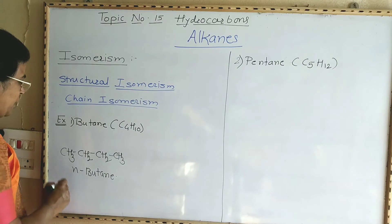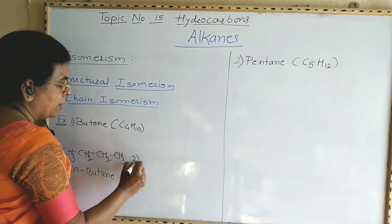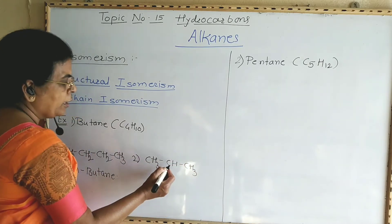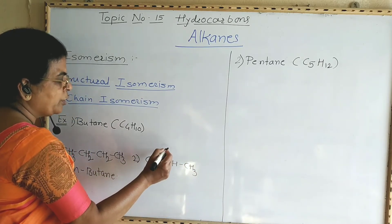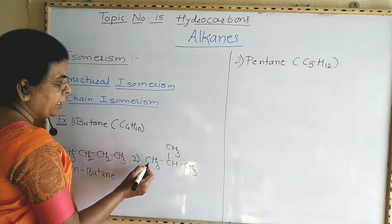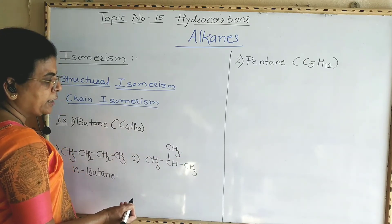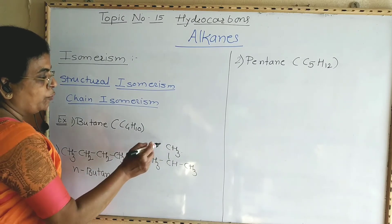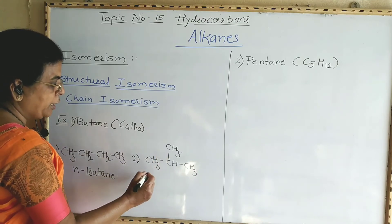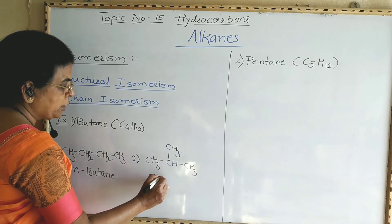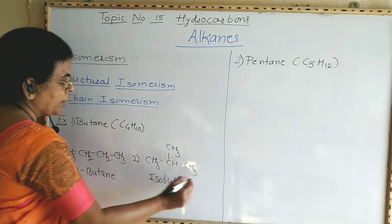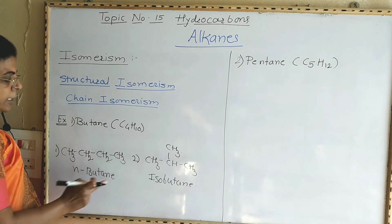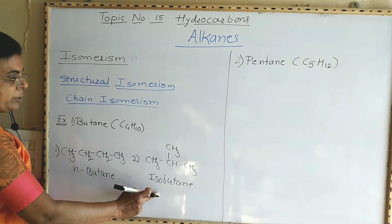The second isomer of butane is: CH₃CHCH₃ with one carbon atom branched at the middle carbon atom as a CH₃ group. Three carbon atoms are in a straight chain and the second carbon atom is branched to a fourth carbon as a CH₃ group — therefore it is isobutane. n-Butane and isobutane are isomers of each other, being straight chain and branched chain isomers, making this an example of chain isomerism.